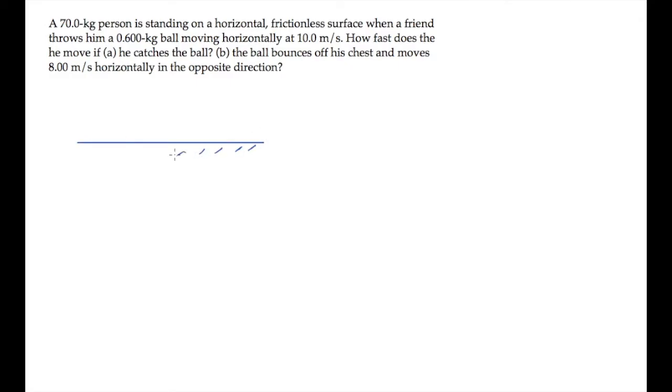The person in this problem is standing on frictionless ice. They have a mass of 70 kilograms, and someone throws them a 0.6 kilogram ball moving horizontally at 10 meters per second. We're asked in part A to find how fast they move if they catch the ball. So I've drawn that in red, the person catches the ball, and we're asked to find that speed v that they move with.